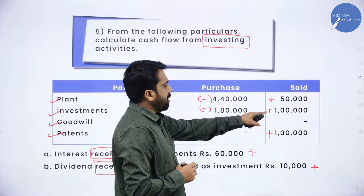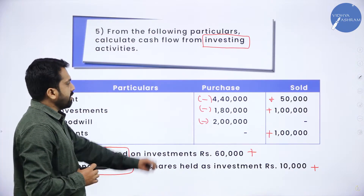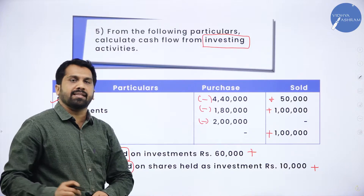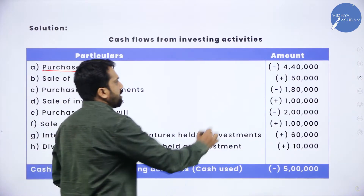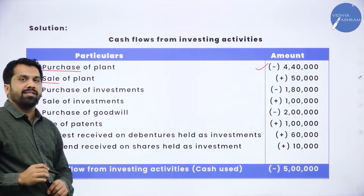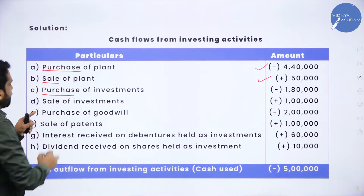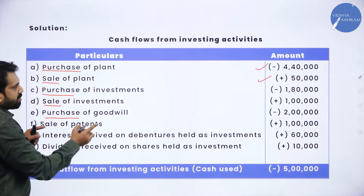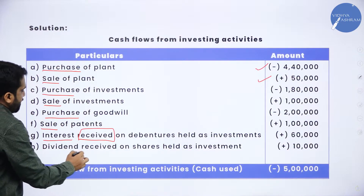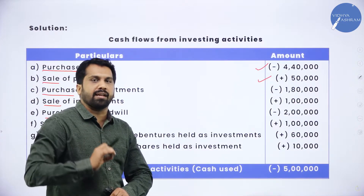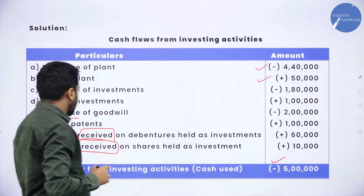Now, you should add 50,000, 1 lakh, 1 lakh, 60,000 and 10,000. Which items should be deducted? 4 lakh 40, 1 lakh 80, and 2 lakh — we have to subtract. Simple calculation. If the word is purchase, minus. The word sale means cash inflow — add. Similarly, purchases are minus, sales are plus. Interest received means add; dividend received means add.